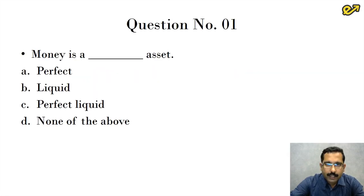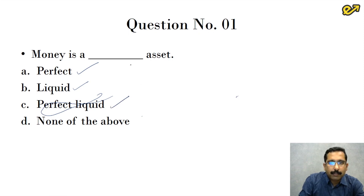Now let us take the first question. First question is money is a dash asset. The options that are given to us are the first option is it is a perfect asset, it is a liquid asset, it is a perfect liquid asset. So this is the right answer for us. Money is the perfect liquid asset.